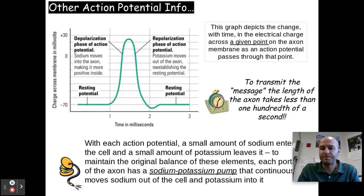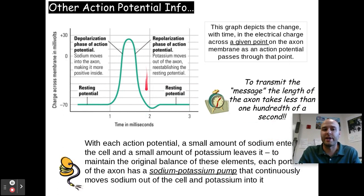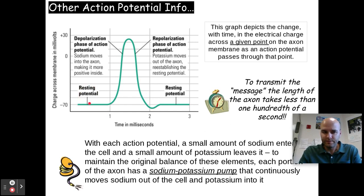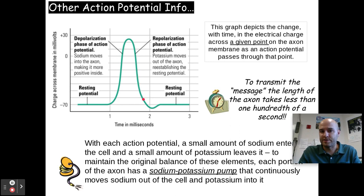For visual learners, on the graph of action potential: at resting potential you're essentially flat. When depolarization occurs and the action potential begins, sodium moves into the axon making it more positive inside and the message is passed. After the message reaches its peak, repolarization begins — potassium moves out of the axon reestablishing resting potential. The dip below the baseline is all part of the refractory period, when the neuron cannot fire or send another message. Eventually we come back to resting potential and are ready to fire again. Transmitting that message the length of the axon takes less than one hundredth of a second.